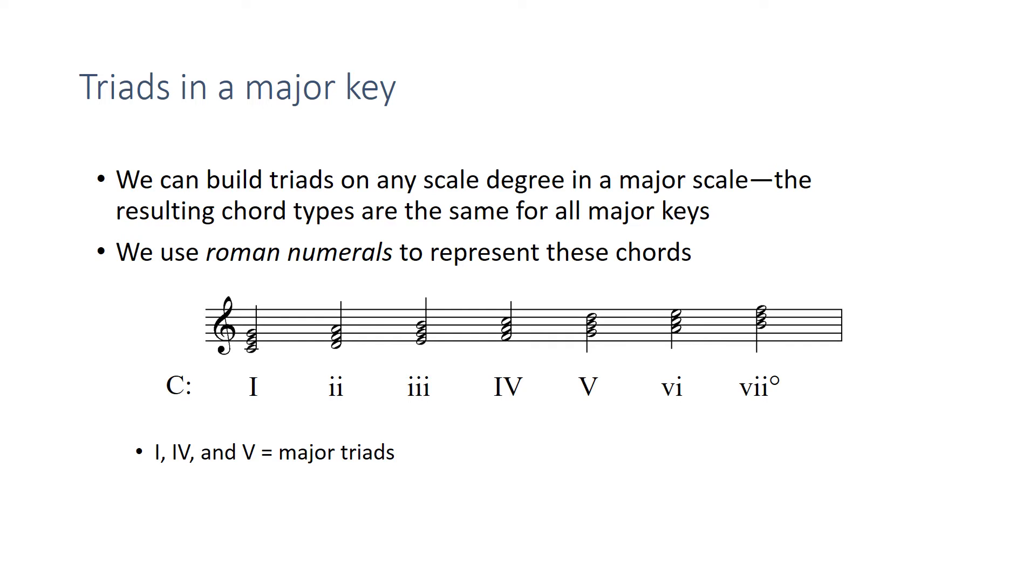Just to summarize then, one, four, and five are major triads in a major key. Two, three, and six are minor triads. Notice we use lowercase numerals for minor triads. And seven is the diminished triad.